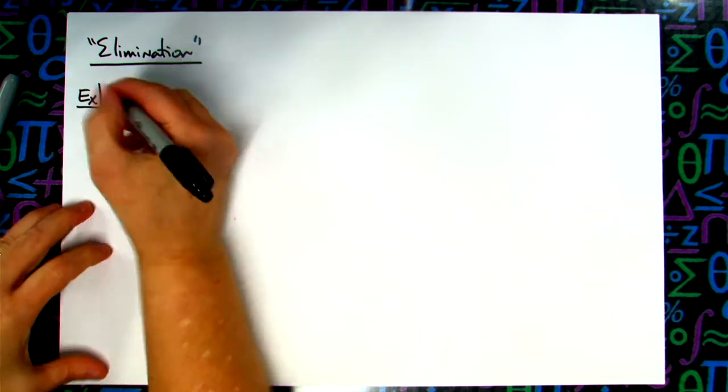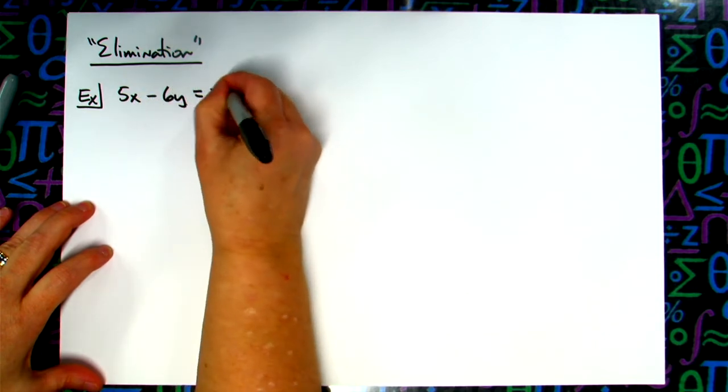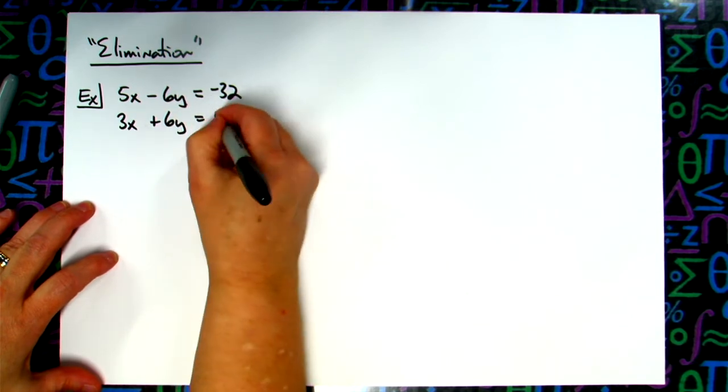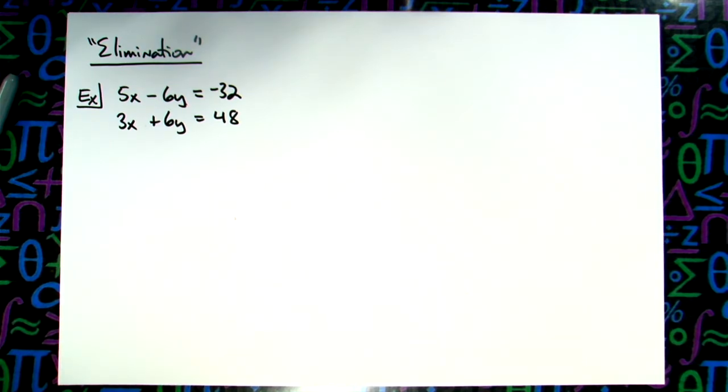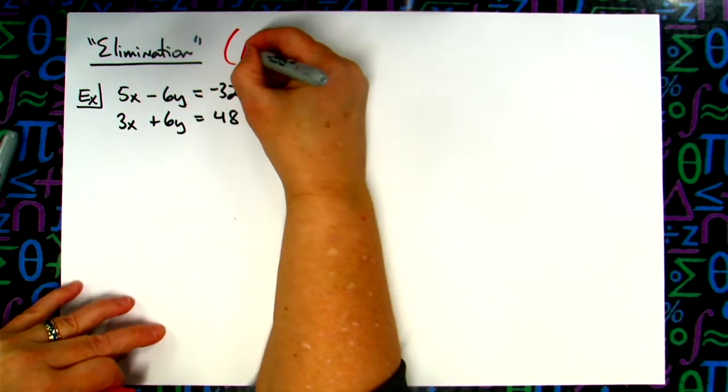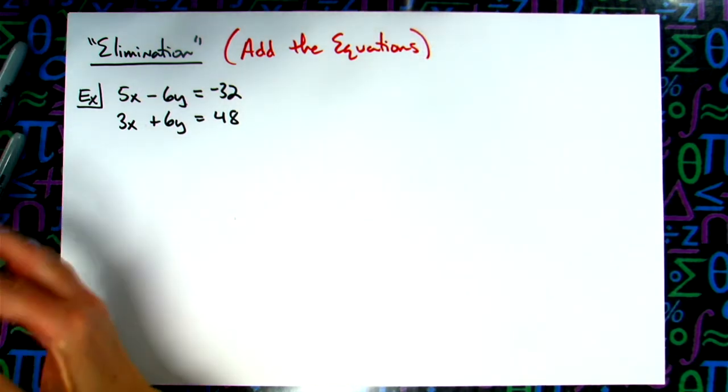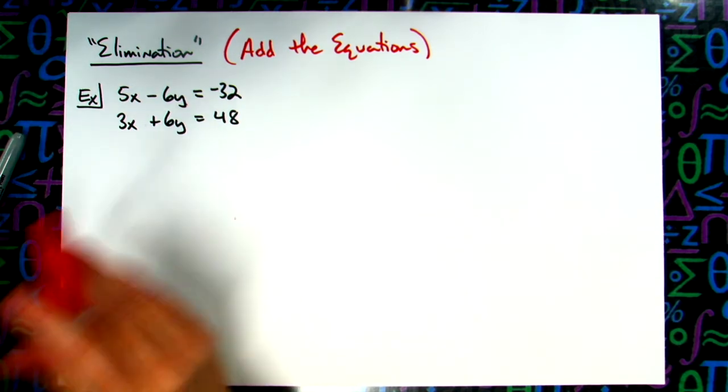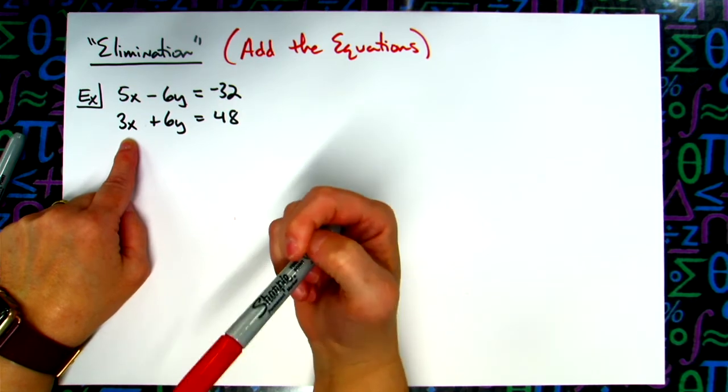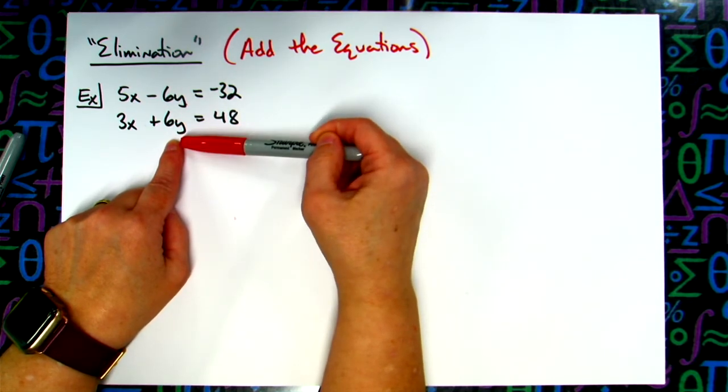So this would be the easiest type of problem that you might see. Maybe say 5x minus 6y is equal to negative 32 for my first equation, and then maybe 3x plus 6y is equal to 48. Now the way we're going to eliminate is we are going to add the equations. We're going to add the equations together and then hope that something will fall out or become zero. So on this one, before I even start, I'm going to look at my x's. If I add those two, are they going to fall out? No, because 5x plus 3x is going to give me 8x. Look at my y's: negative 6y plus 6y, if I add that is that going to become zero? Yes. So this one is easy because you don't have to really do any work.